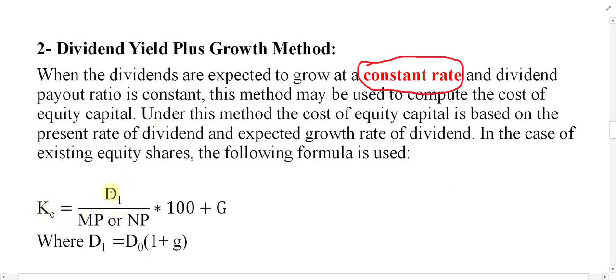Because of this constant growth assumption, the formula changes slightly. It is: D divided by MP, multiplied by 100, plus G. Only G is included here because G means the growth rate. Sometimes D is also written as D1.